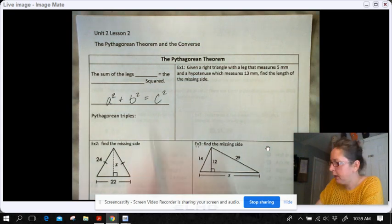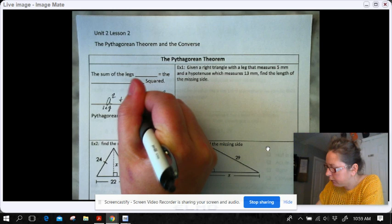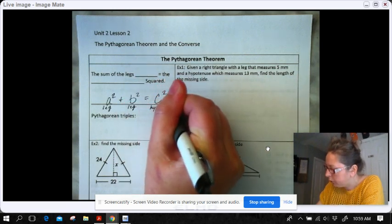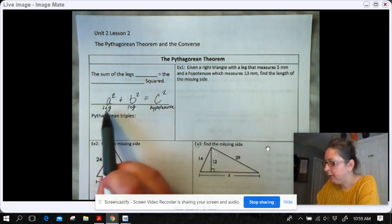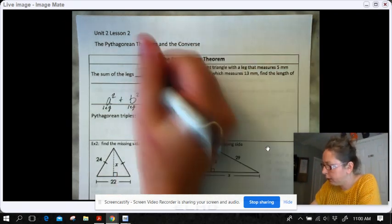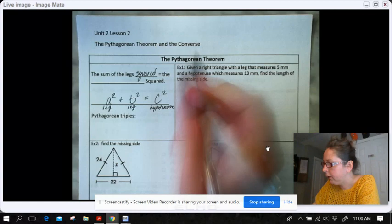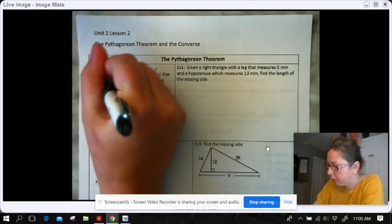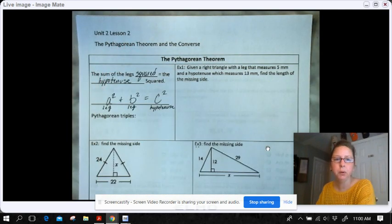I know most of you will remember it is A squared plus B squared equals C squared. But what does that mean? So we have a leg and a leg and a hypotenuse. It is the sum of the squared legs equals the hypotenuse squared.